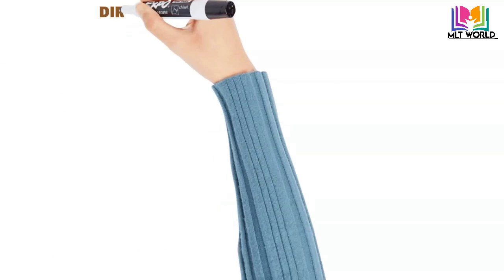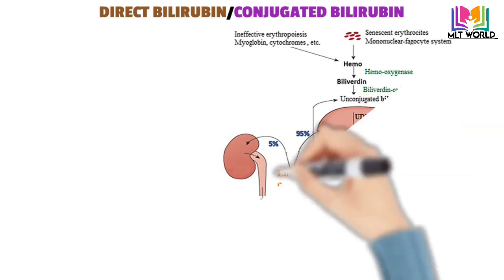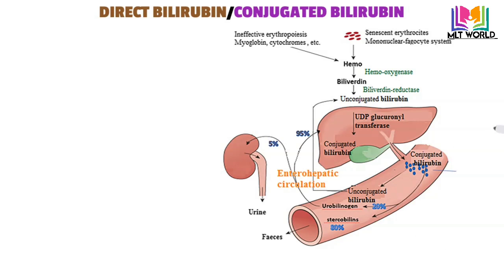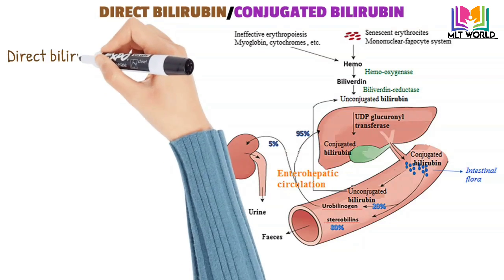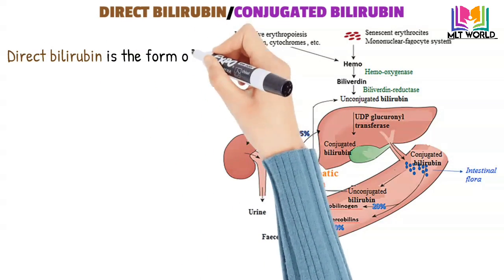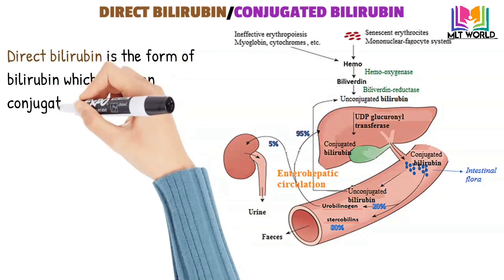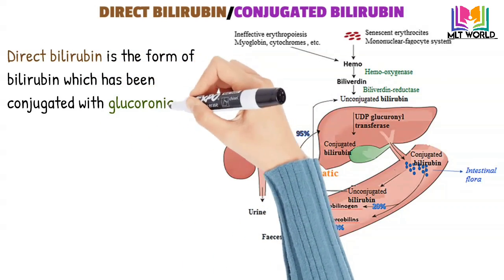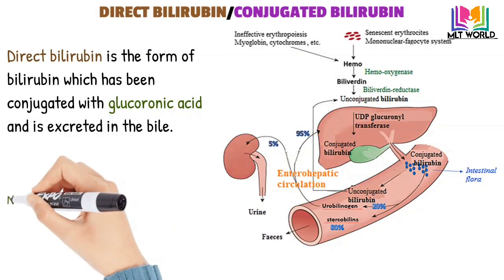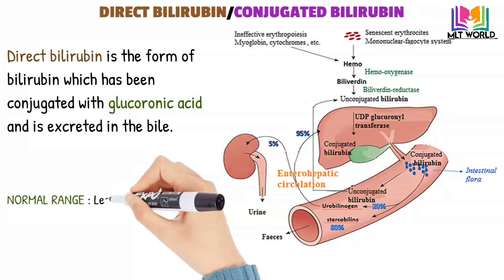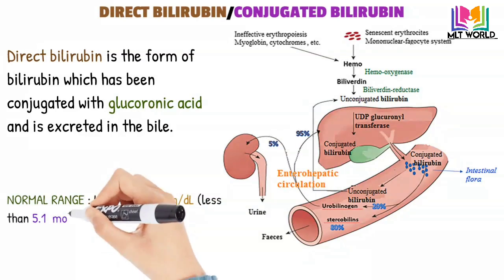Next is direct bilirubin, also called conjugated bilirubin. There are two types of bilirubin: direct and indirect. When RBCs break down and release bilirubin, it enters the liver and conjugates with glucuronic acid, forming direct bilirubin, which is then excreted through the small intestine. If there is liver damage, more direct bilirubin is released, indicating the hepatic stage of infection. Normal range of direct bilirubin is less than 0.3 mg/dL (5.1 mmol/L).